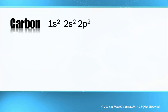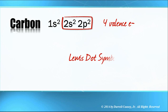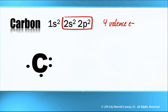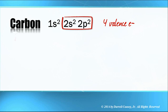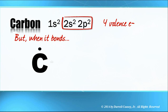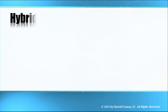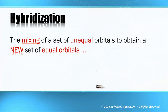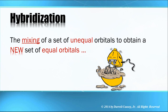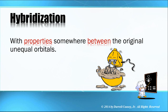So let's look at carbon. Carbon has a 1s², 2s², 2p² electron configuration. It has four valence electrons, and its Lewis dot symbol has one s orbital and three p orbitals. But when it bonds, we end up with four equal bonds. Well, hybridization is the answer to that question. Hybridization is the mixing of an unequal set of orbitals to obtain a new set of equal orbitals, and this new set has properties somewhere between the original unequal orbitals.